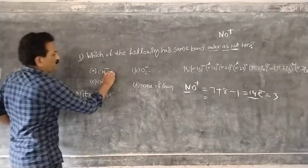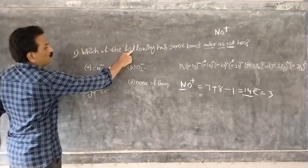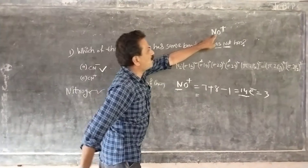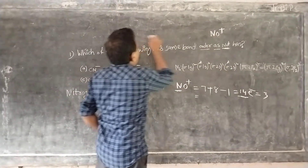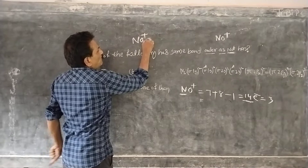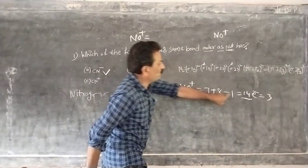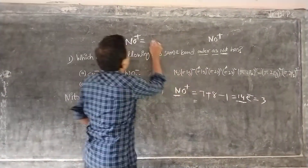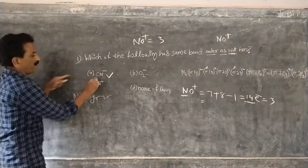So NO⁺ has 14 electrons and bond order is 3. Now, which of the following options also has the same bond order of 3?